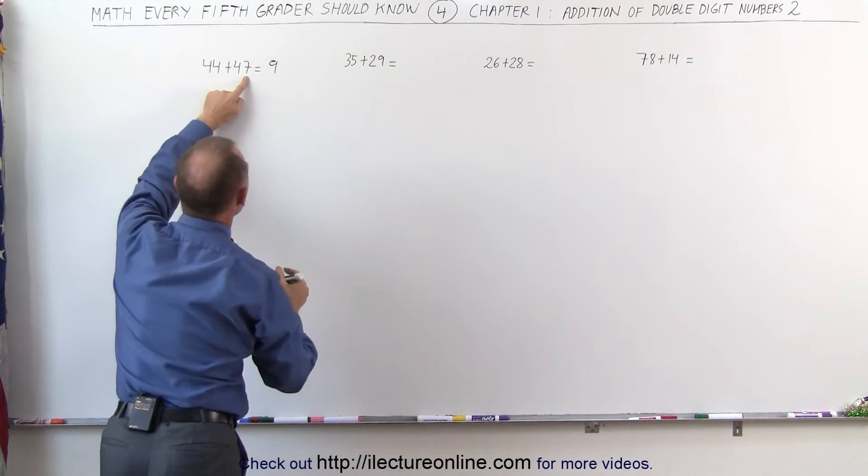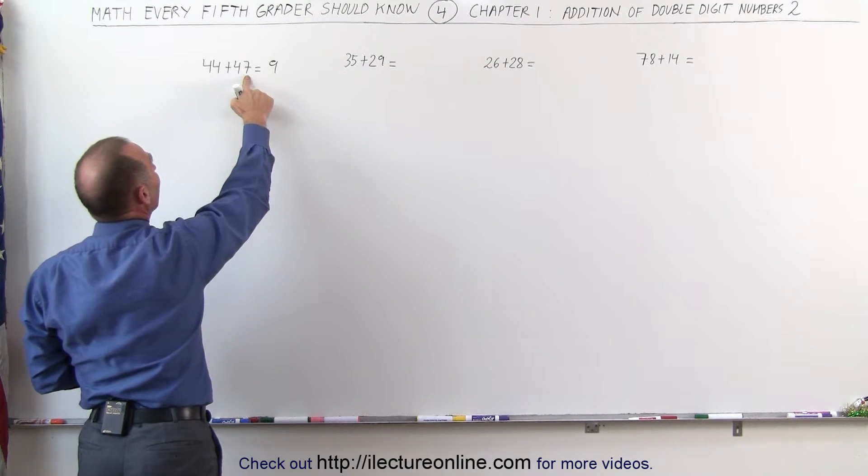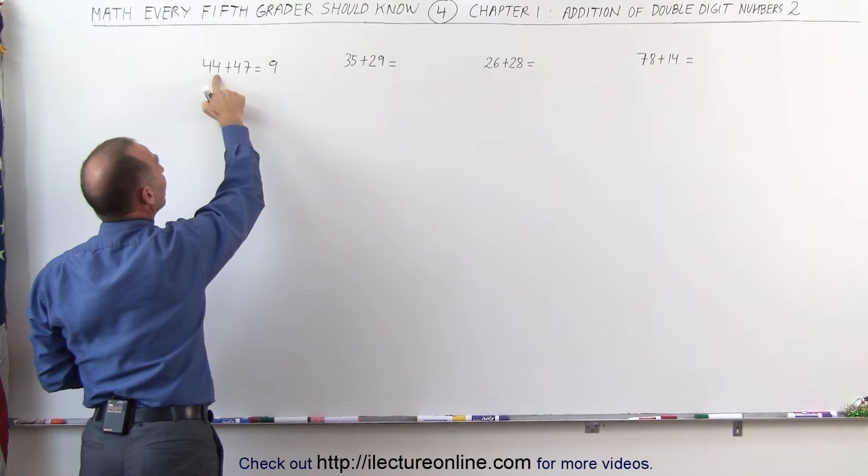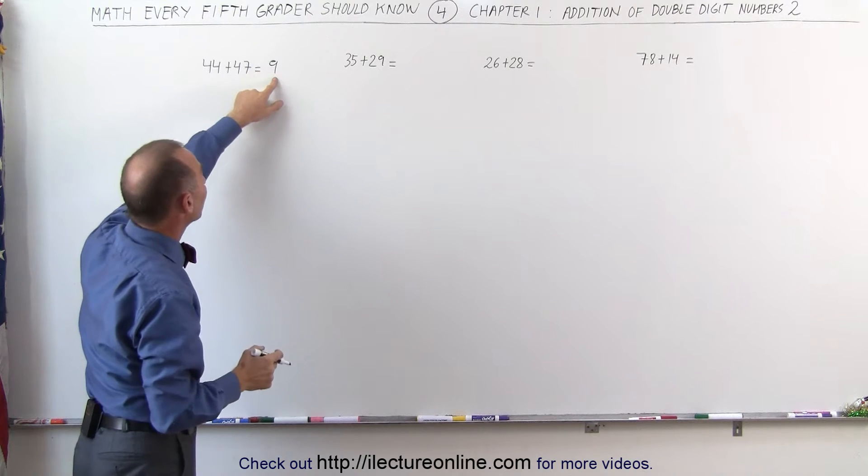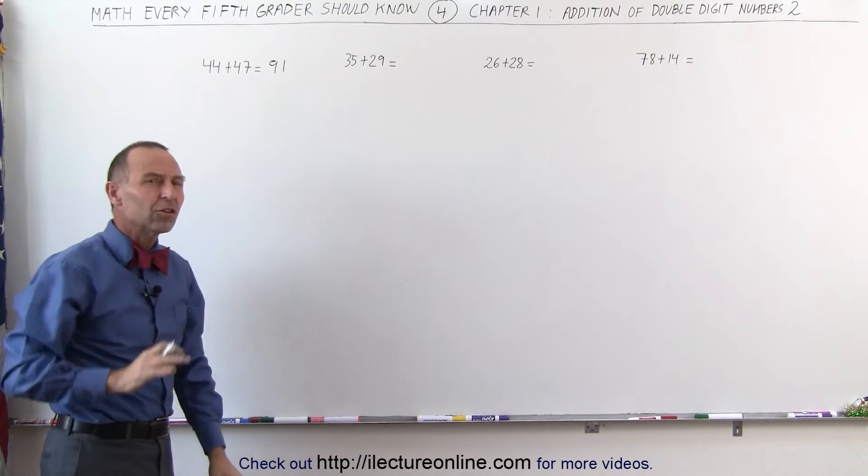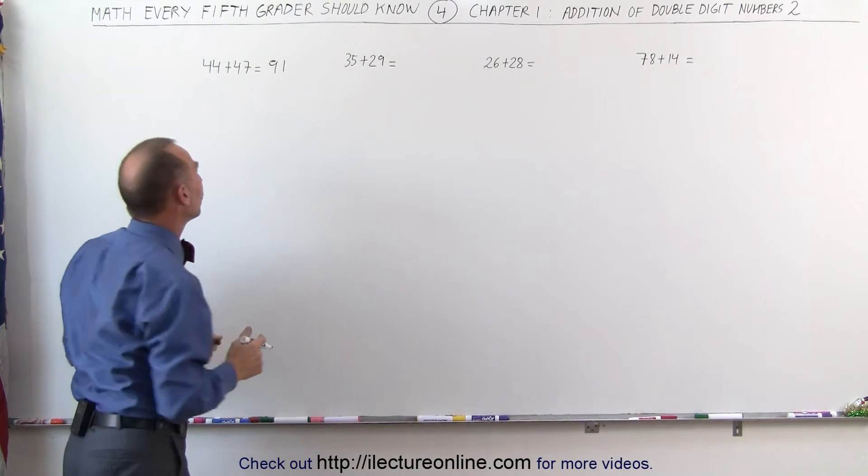Now, 4 plus 7, how much more do you need to add to 7 to get 10? You need to add 3 more, so you subtract 3 from the 4 to make that 10. That leaves you with 1, that gives you 11. But the 10 was already given to the first number, you now have one number left. That's the one which you add over here.